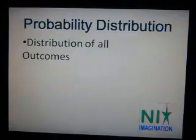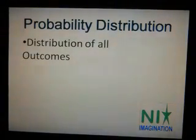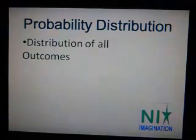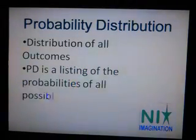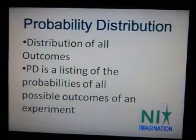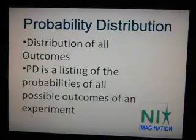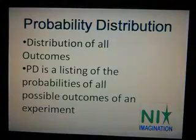What is probability distribution? In simple terms, it's the distribution of all outcomes. But statistically, probability distribution is the listing of probabilities of all possible outcomes of an experiment.